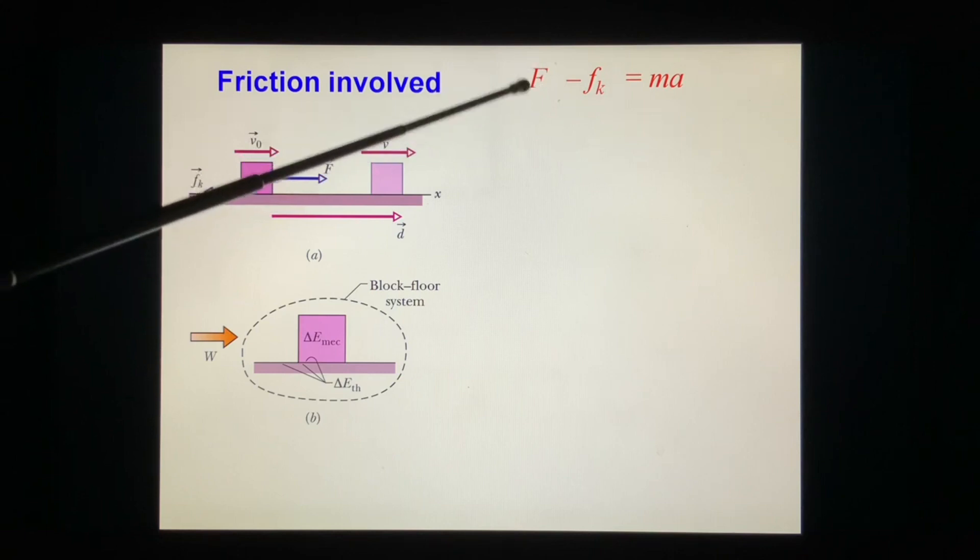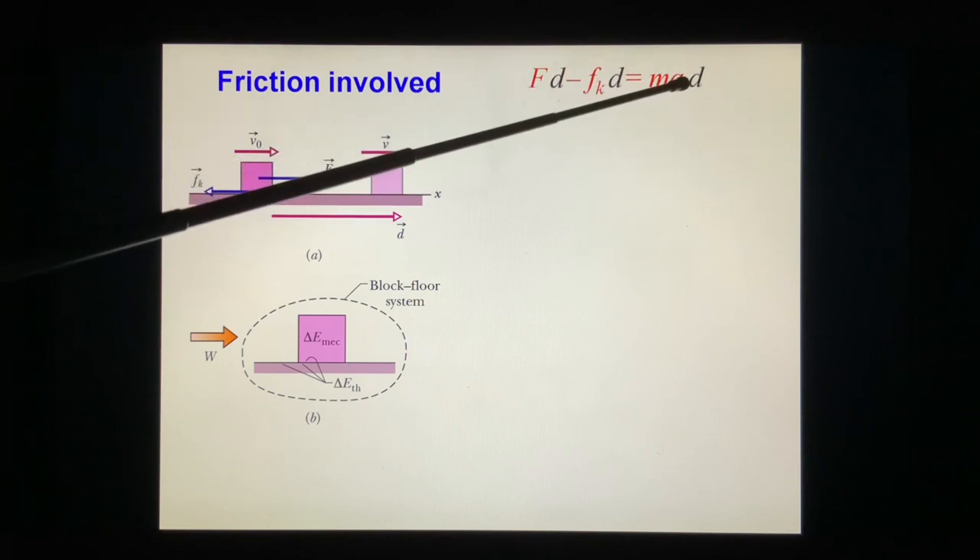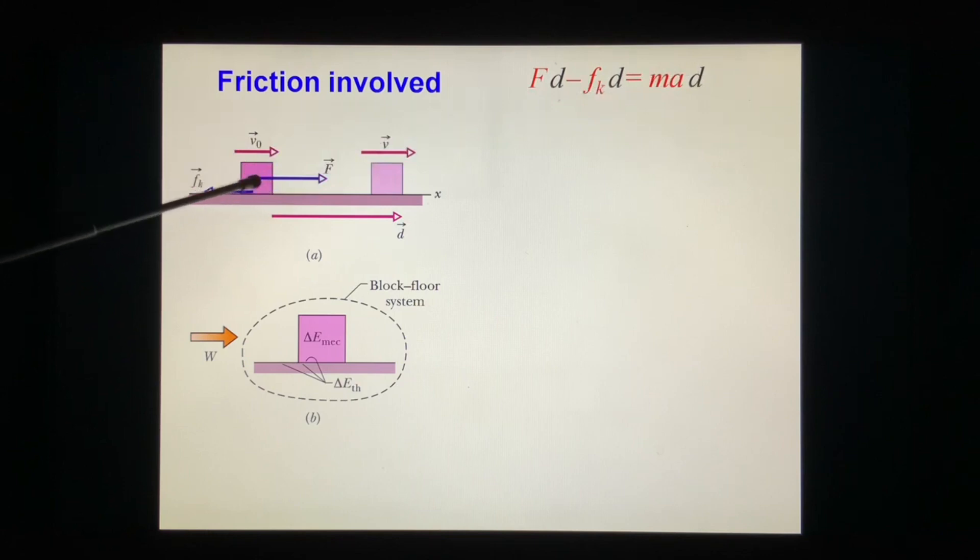If we multiply displacement d on both sides, we get Fd - f_k·d = mad. Now, let's look at what mad is. This is a constant acceleration movement.